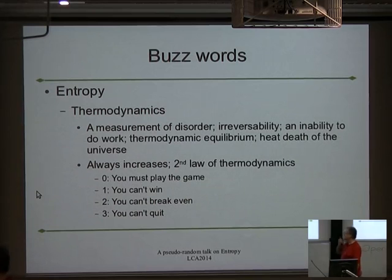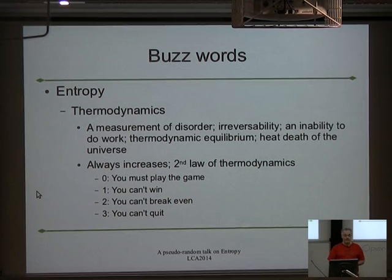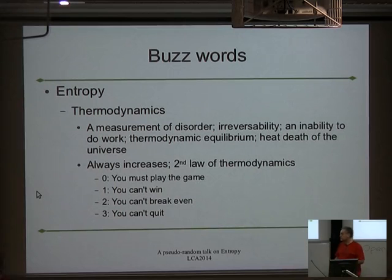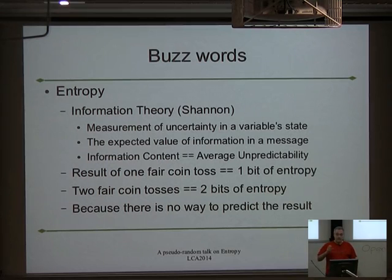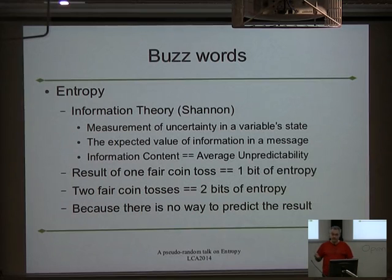The word entropy comes from thermodynamics — a lovely concept about how eventually the universe is going to end up in a state where it can't actually do any work. Entropy is the thing that's useless to you. When we switch over to using the word entropy in computer science, we're talking about unpredictability. If you know what state a variable is going to be in in the future, it doesn't have an awful lot of entropy. If you don't know, then we have some entropy here.